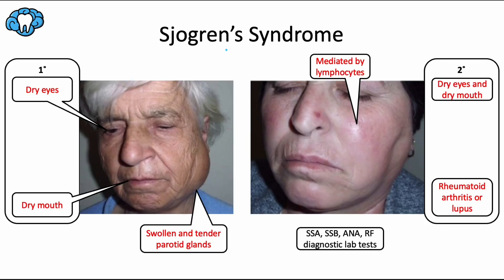Next, I want to talk about Sjogren's syndrome, which is frequently asked about on the board exam. This is an autoimmune condition, which means the body's immune system malfunctions and mistakes its own healthy tissue as pathogenic and attacks it. This immune response is mediated by lymphocytes, which is extremely important to remember. Sjogren's patients have generally more aggressive lymphocytes, which means they're also at a higher risk of developing lymphatic cancer, also called lymphoma.